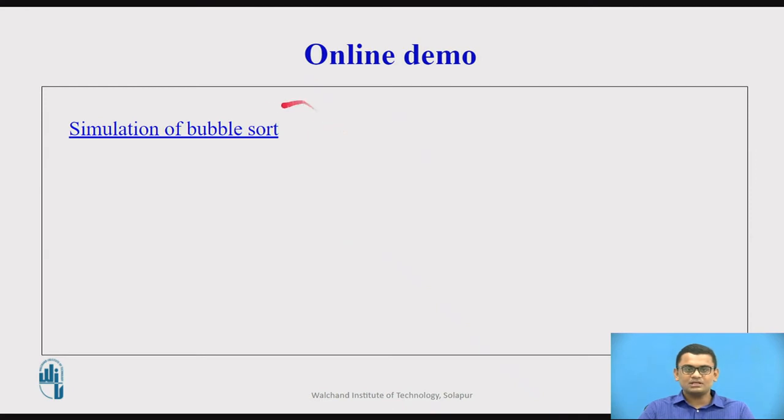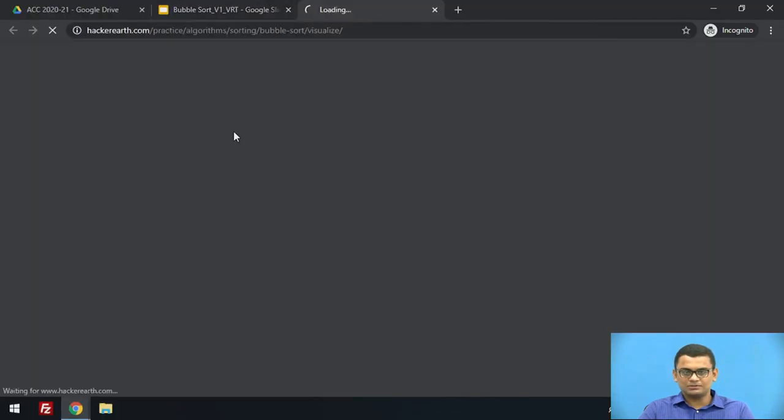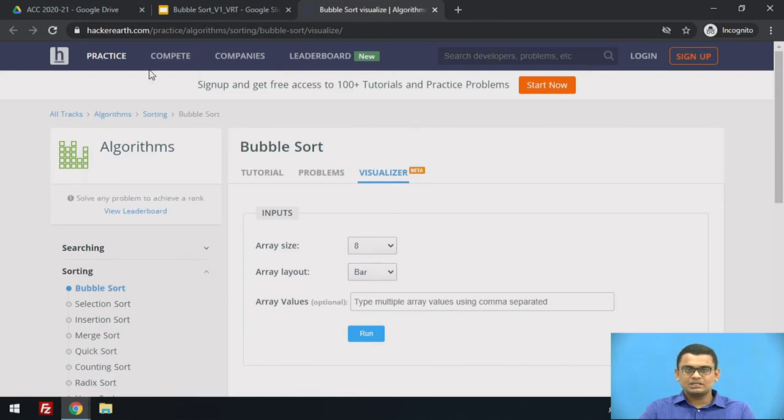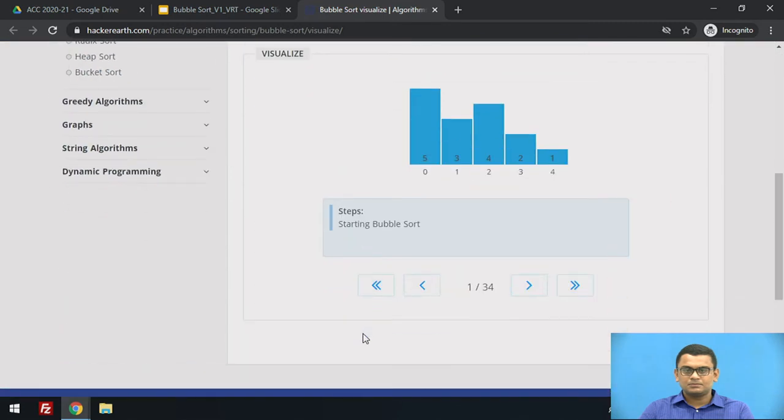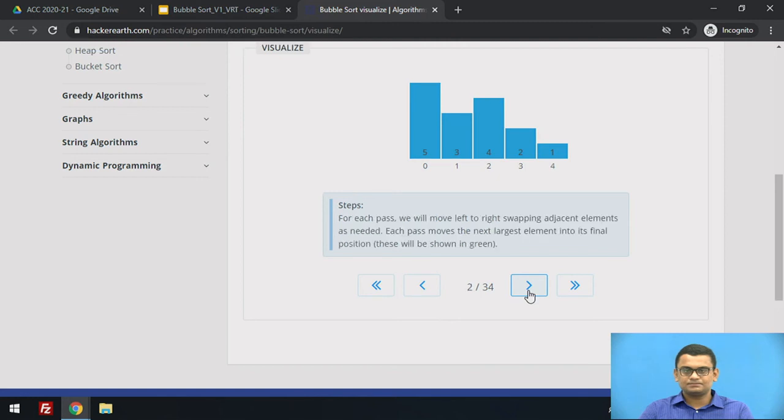I want to show you a simulation of bubble sort. This is hackerearth.com platform and I am using the visualizer that they have on the platform. Say for example, we have five elements in the given order. So let us see how bubble sort works. We move from left to right swapping the adjacent elements.